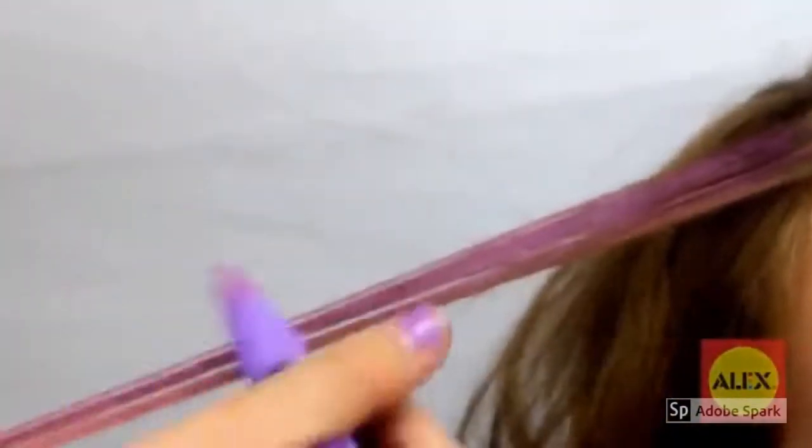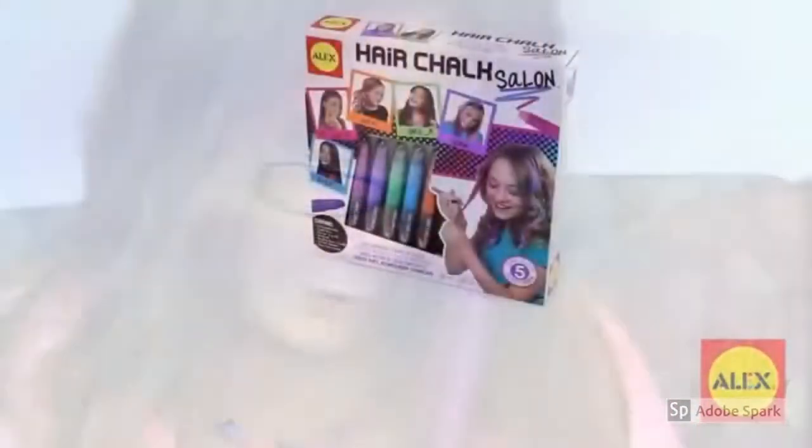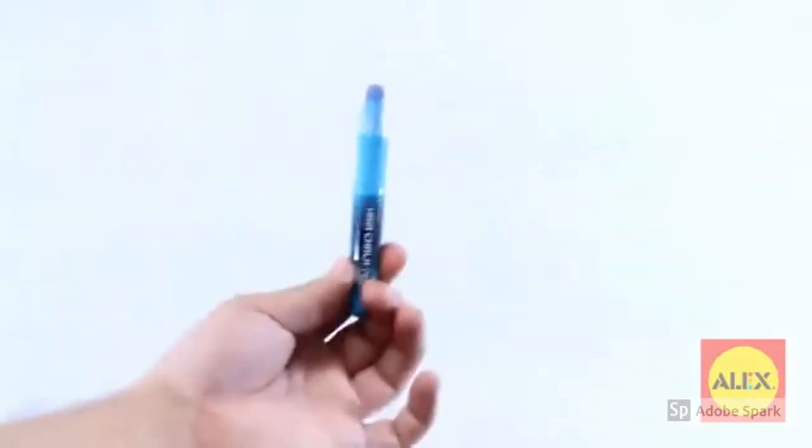The temporary streaks of hair color are easily removed with shampoo, so you're always ready for a new look. The Hair Chalk Salon set comes with five washable chalk pens in pink, purple, orange, blue, and green.